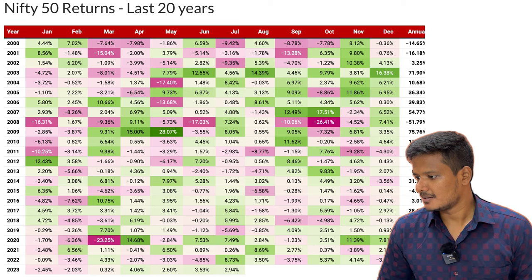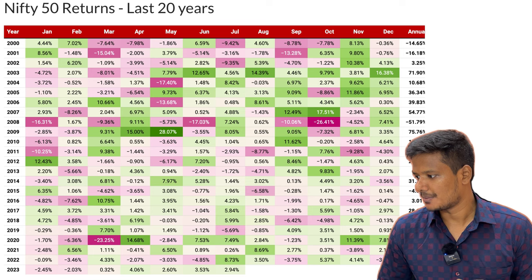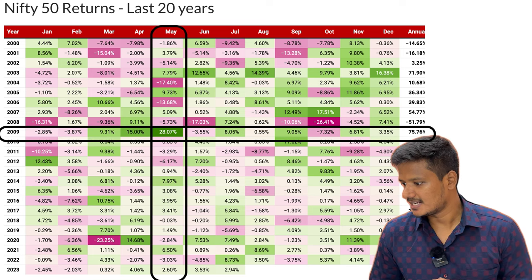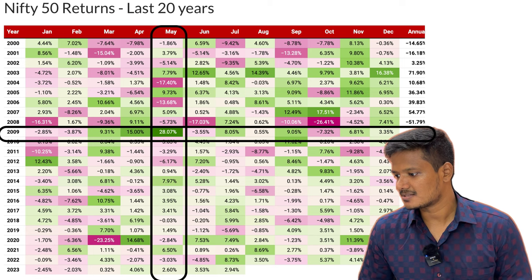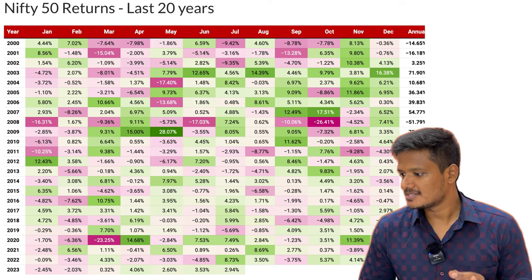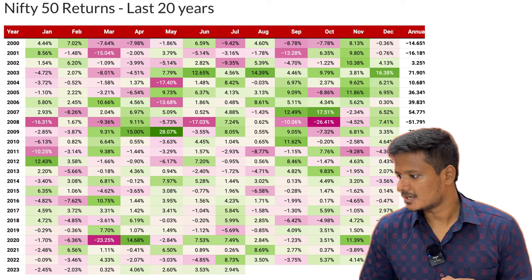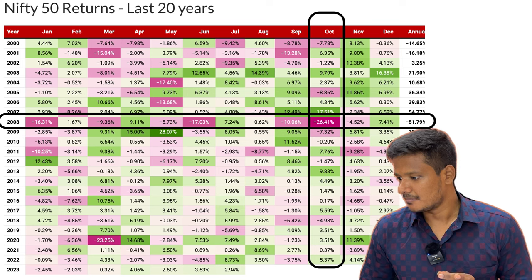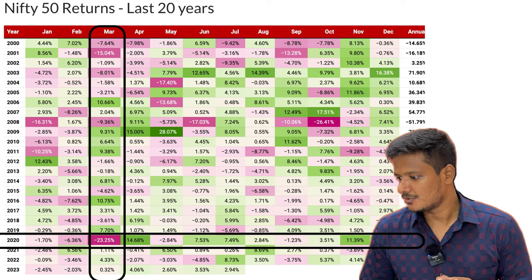If you look at the screen, you can see the maximum or minimum monthly returns. In May 2009, there was a 28% return in a single month. However, in October 2008, there was a minus 26% return. In March 2020, there was a minus 23% return during COVID.